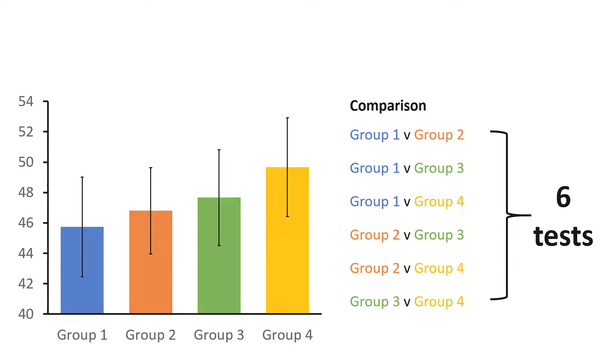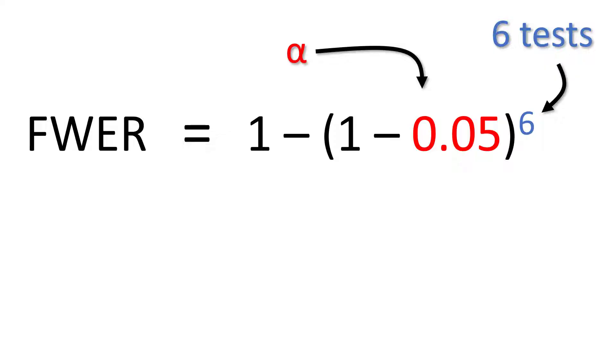But before we do that let's just quickly calculate the family-wise error rate for this if we didn't control for any multiple comparisons. As before our alpha level is 0.05 but this time m is 6 because we are performing 6 tests simultaneously.